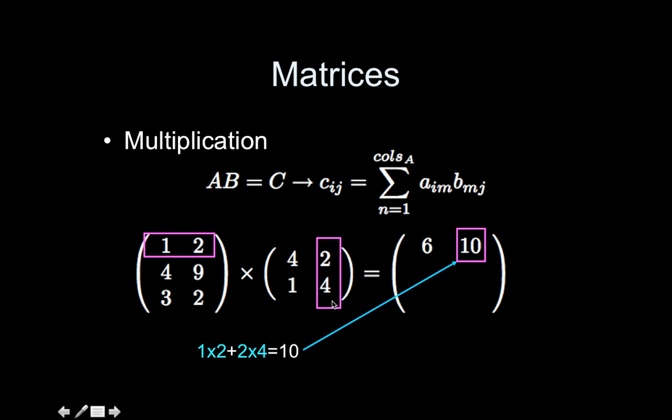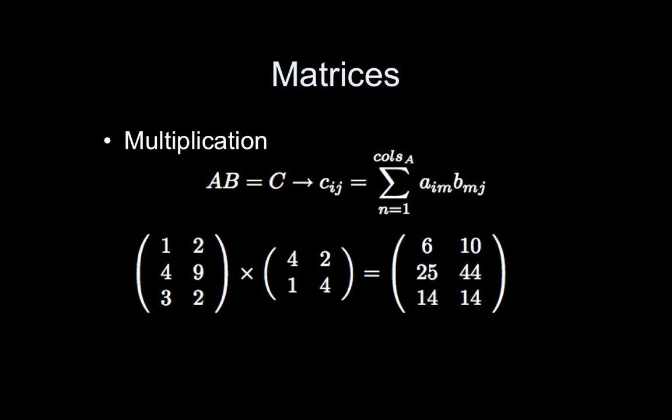...sorry, the first row of the first matrix, second column of the second matrix, that's giving me the results for the first row, second column. So it's one times two plus two times four, and then repeat to get the rest of the numbers.